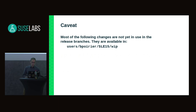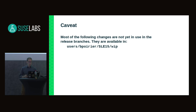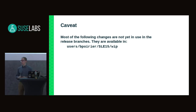First, I should give a caveat: most of the changes I'll talk about, although already implemented, are not yet in use in the main scripts branch. They're available in the user branch, in the work-in-progress WIP branch. The main reason is that I want a little more testing to make sure everything works as well as possible, because there are a lot of people using these and I don't want to disrupt anybody's workflow.